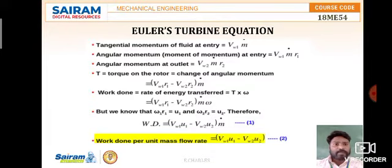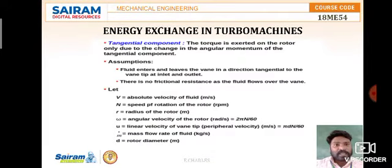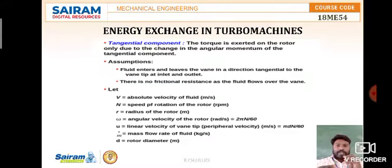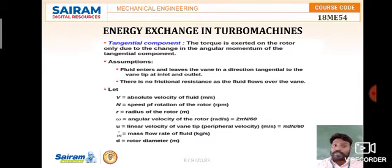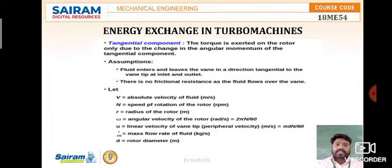Before that, we will see different notations. V is equal to the absolute velocity of the fluid in meters per second. When water comes out from the jet with velocity V, that is the absolute velocity — the velocity before hitting the turbine blade. After hitting, when it exits, it moves out with absolute velocity V2. So V1 is at inlet and V2 is at exit.